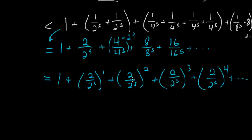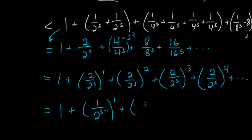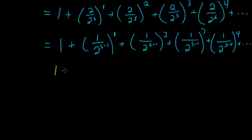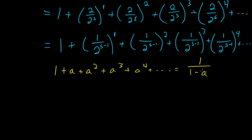Now notice this is a geometric series, and we can simplify 2 over 2 to the s — since there's a 2 in the numerator, we can cancel that with one of the 2s in the denominator — and rewrite this entire term as 1 over 2 to the s minus 1. So each term in the series can be rewritten as 1 over 2 to the s minus 1. In general, a geometric series 1 plus a plus a squared plus a to the third and so on equals 1 over 1 minus a, when a is less than 1 and greater than negative 1. So in our case, our value of a is 1 over 2 to the s minus 1.